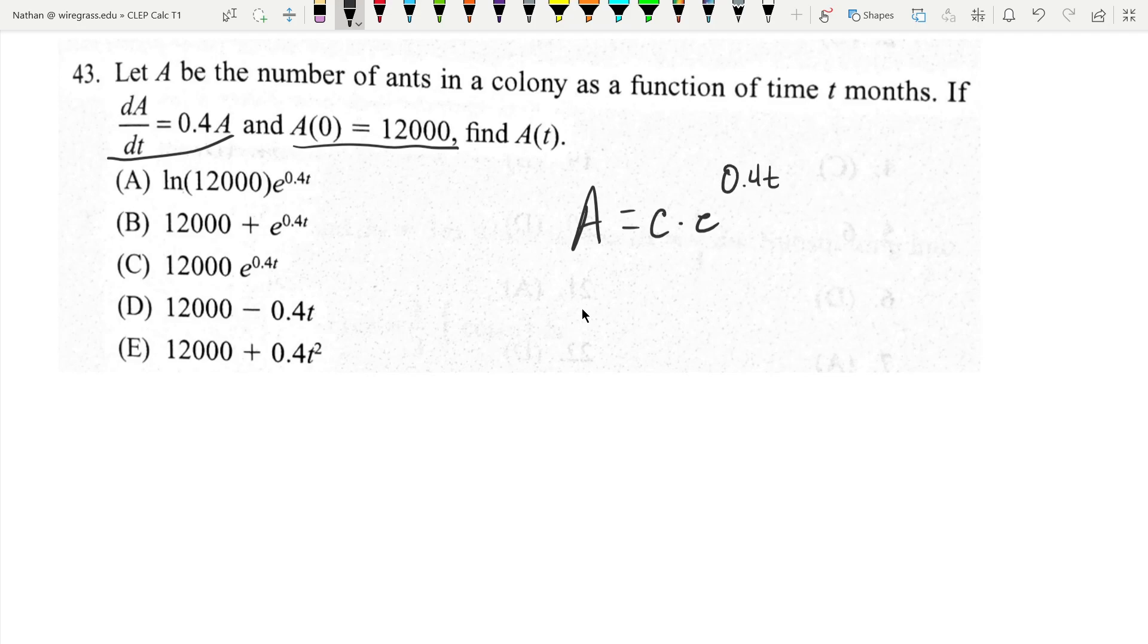Because when you take a derivative of this, dA dt, the constant just comes out of it, this gets pulled down, we get c times 0.4 e to the 0.4 t. And of course, this is just going to be 0.4 times c e to 0.4 t. But this is just A. So we get 0.4 times A. That's exactly this differential equation here, where it has a derivative and the function in there.